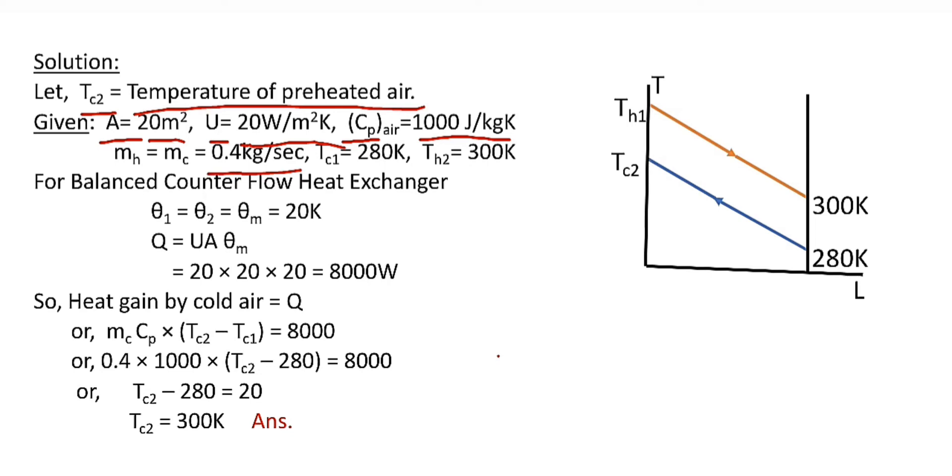specific heat of air at constant pressure Cp = 1000 Joule per kg Kelvin. Mass flow rate of hot and cold air is 0.4 kg per second, inlet temperature of cold air Tc1 = 280 Kelvin and outlet temperature of hot air Th2 = 300 Kelvin. These values are given in the question.